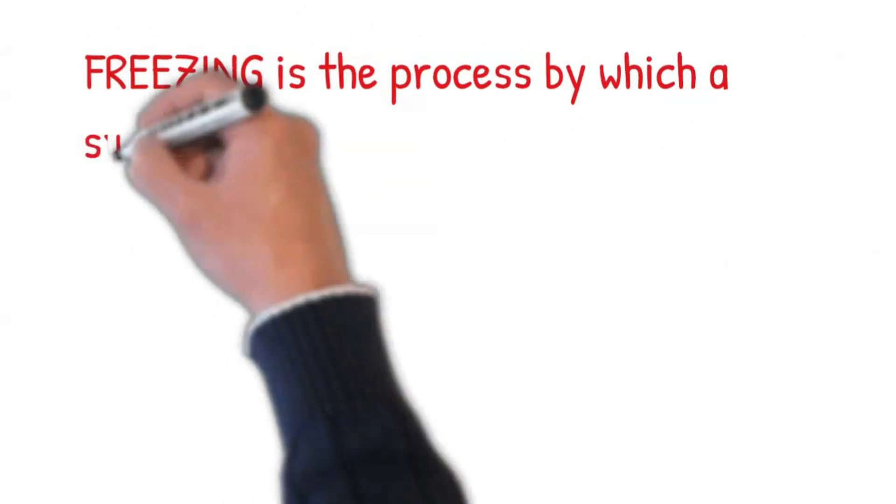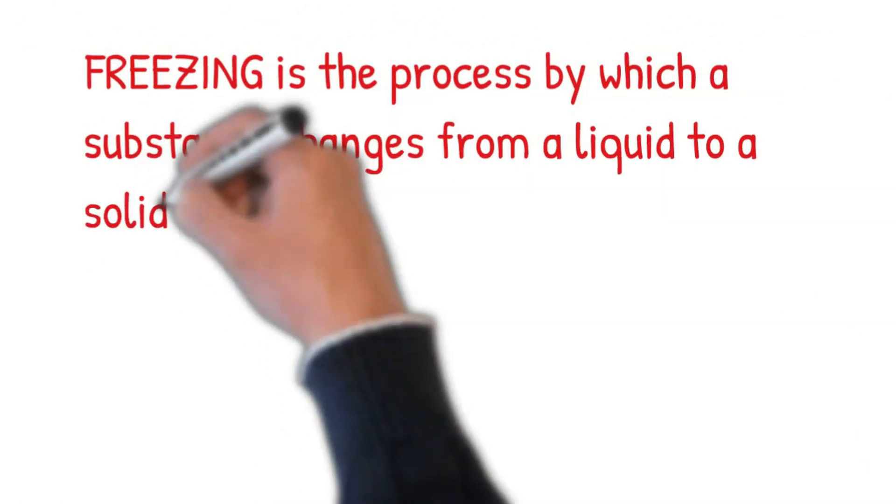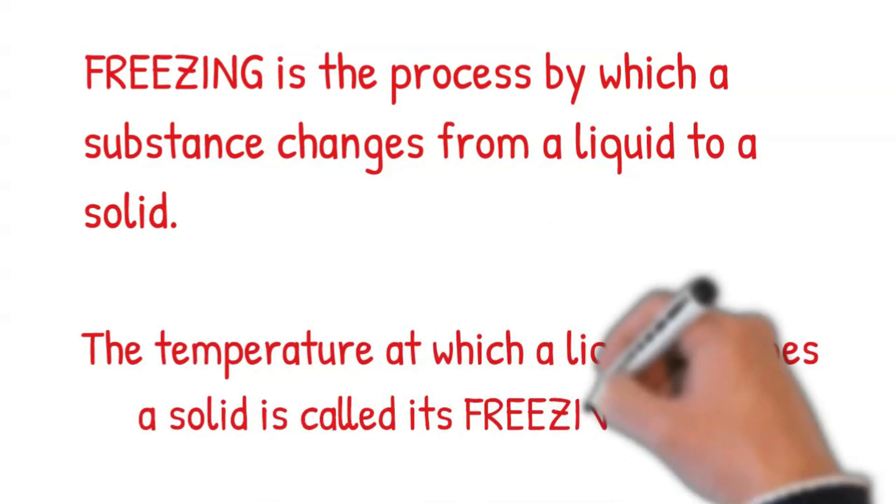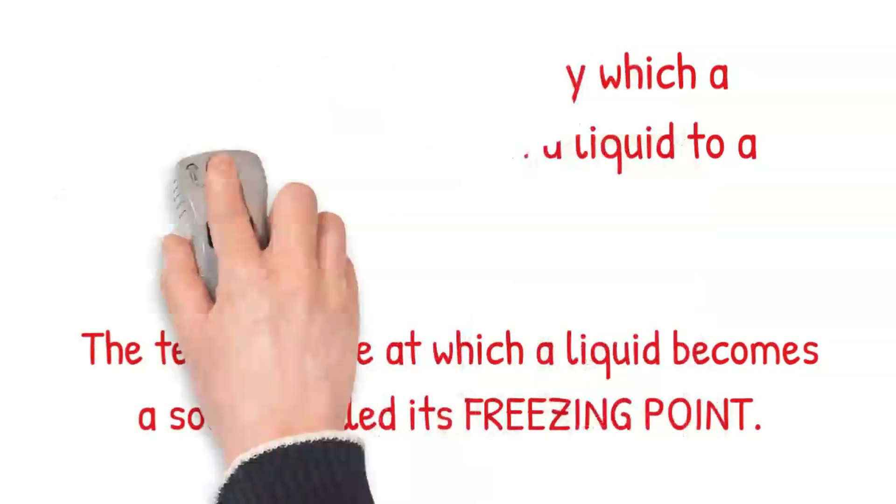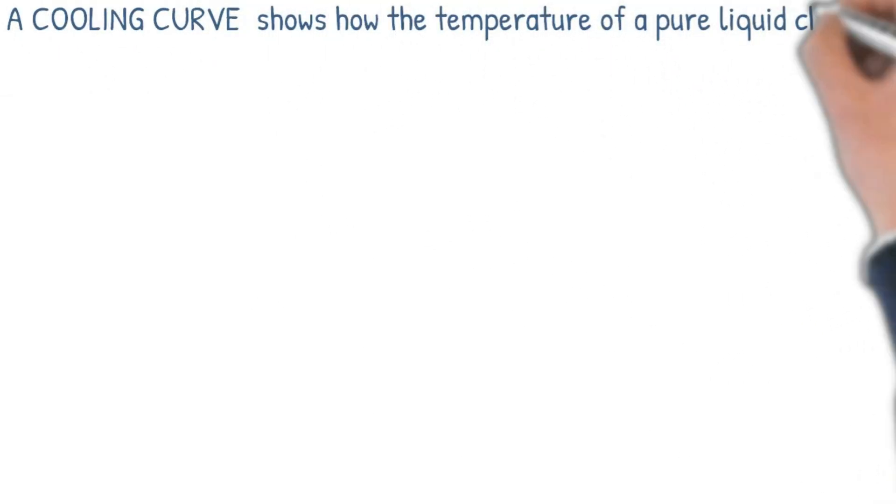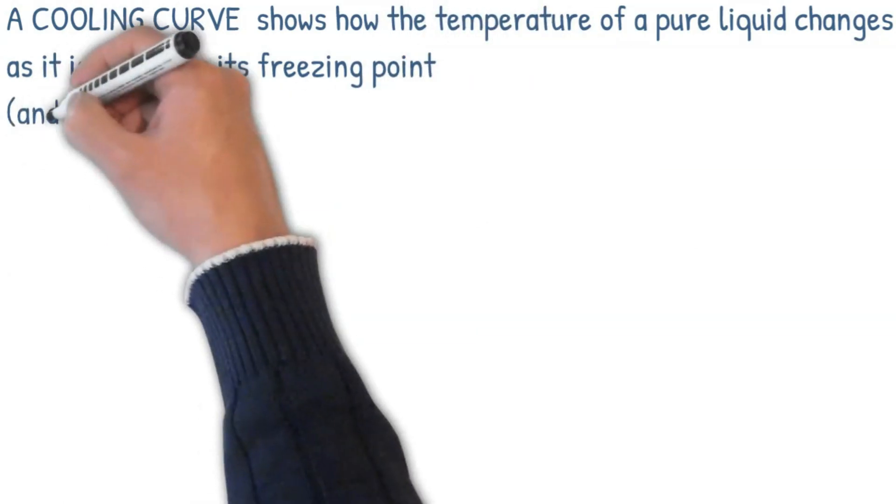Freezing is the process by which a substance changes from a liquid to a solid. The temperature at which a liquid becomes a solid is called its freezing point. A cooling curve shows how the temperature of a pure liquid changes as it is cooled to its freezing point and beyond.